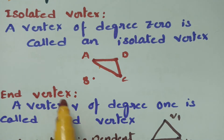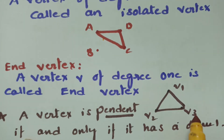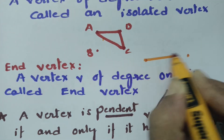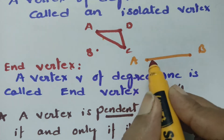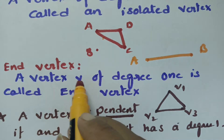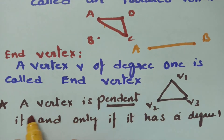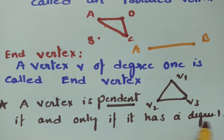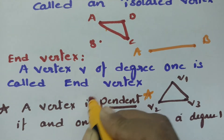What is an end vertex? A vertex v of degree 1 is called an end vertex. In this diagram, vertex a and vertex b each have exactly one edge, so the degree is 1 for both — therefore a vertex of degree 1 is called the end vertex. A vertex is pendant if and only if it has degree 1.